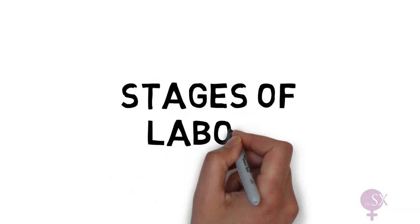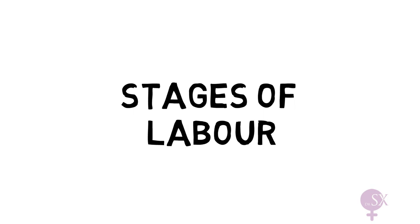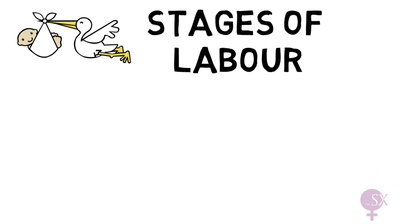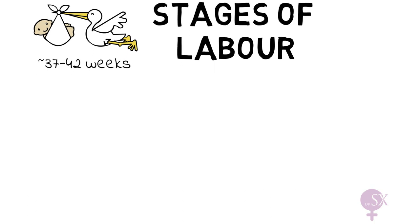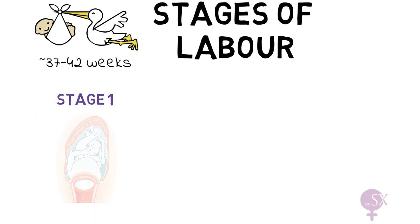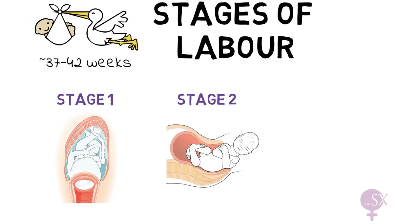Hi, I'm Sarah and this is a video about the stages of labor. Labor refers to the delivery of a baby — this describes several stages of hard work endured by the mother until the baby is delivered. This occurs between 37 and 42 weeks when the fetus is full term. In some cases labor may occur before 37 weeks, referred to as preterm labor. It is divided into three stages: stage one where the cervix opens to full dilatation, stage two from full dilatation to delivery of the fetus, and stage three which involves delivery of the placenta.